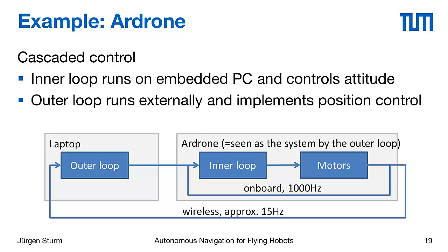To look at an example now, the AR drone also uses several control loops. We have an inner loop that runs on the embedded PC that controls the attitude and the speed of the quadrotor. And then the outer loop runs on a laptop and implements the position control.